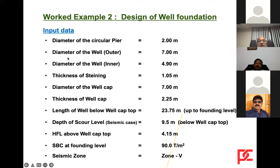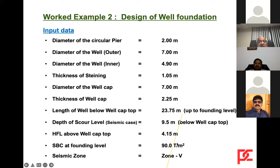Data for this example: diameter of circular pier is 2 meters. Outer diameter of well is 7 meters, inner diameter is 4.9 meters, giving a steining wall thickness of 1.05 meters. Diameter of well cap is 7 meters, thickness of well cap is 2.25 meters. Length of well below well cap is 23.75 meters. Depth of scour level in the seismic case is 9.5 meters below the well cap, meaning about 10 meters is scoured and 13 meters remains as soil up to foundation level.